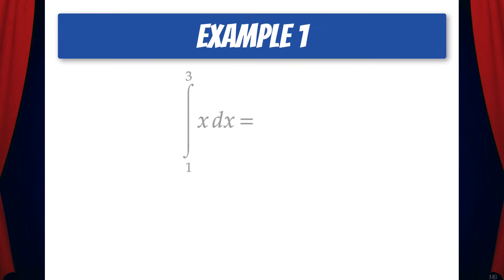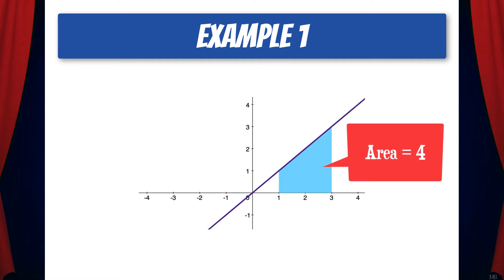Okay, let's do some examples. Evaluate the integral from 1 to 3 of x dx. So the first thing we need to do is find the antiderivative function, which is x squared over 2. And we're going to evaluate that from 1 to 3 using the fundamental theorem of calculus. That gives us 3 squared over 2 minus 1 squared over 2, which simplifies to 4. And that's the exact area under the function f of x equals x from 1 to 3.